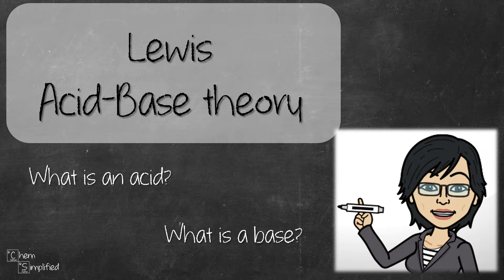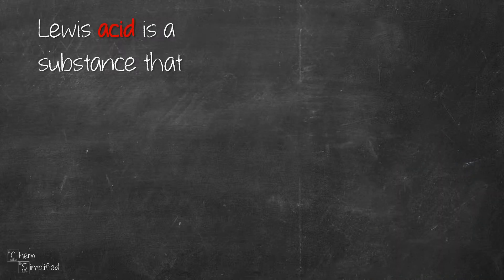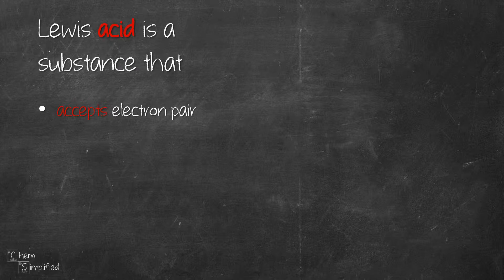In this video, we're going to answer questions on Lewis acid and base theory. In the Lewis theory of acid and base reactions, an acid is a substance that can accept pairs of electrons, therefore it's known as an electron pair acceptor.